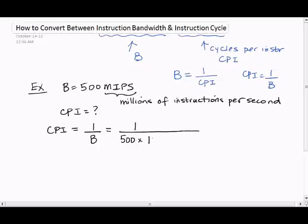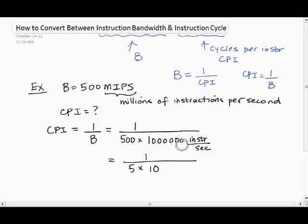Which is 1 over 500 millions instructions per second. A million is 1,000,000, so that's 6 zeros. Let's simplify the bottom in scientific notation. This is 5 times 10 to the 8.